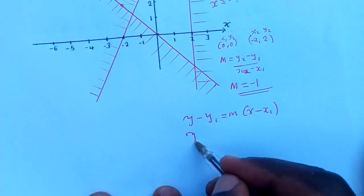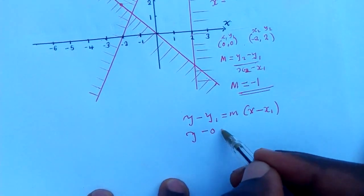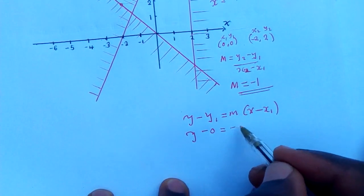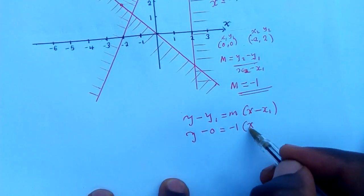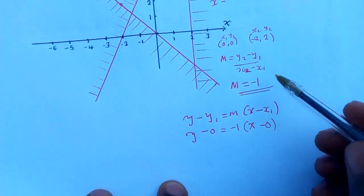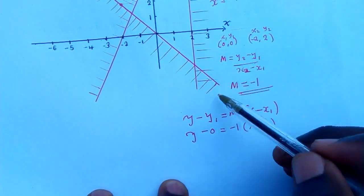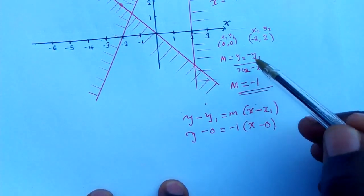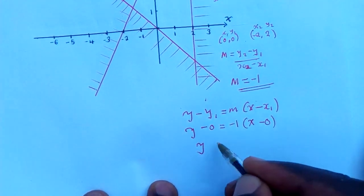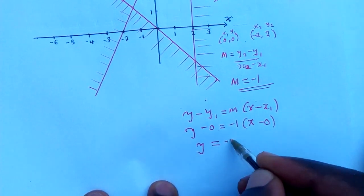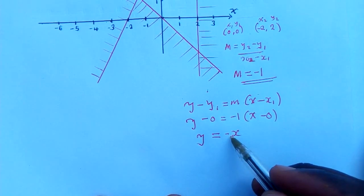Using the equation formula, you put y minus y₁ equals m times (x minus x₁). Where y₁ is 0, m is negative 1, and x₁ is 0. You just take these coordinates and put them in — the same values you used when finding the gradient. After solving, you remain with y is equal to negative x.